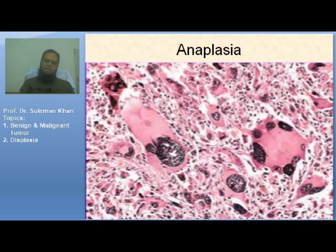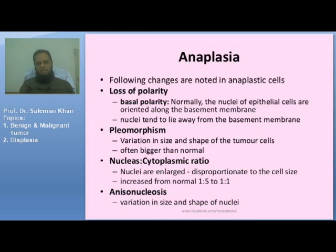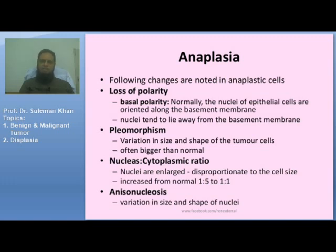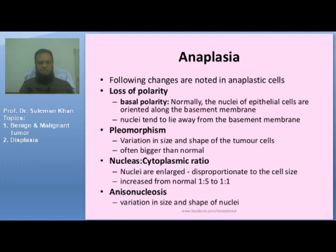Any tumor which is anaplastic must be diagnosed by marker studies. Epithelial markers are applied because the cells are not properly differentiated and do not resemble their tissue of origin. This is an undifferentiated tumor, and it must be determined whether it is an epithelial tumor or a mesenchymal tumor. Marker studies and immunohistochemistry are used for this purpose, since treatment differs for epithelial versus mesenchymal tumors.